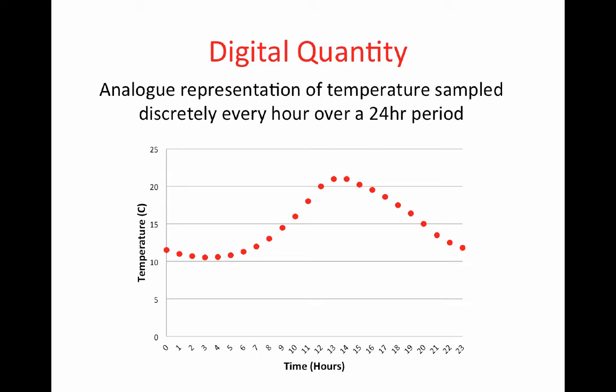This has converted a continuous analogue quantity, in this case temperature, to a discrete set of values that can be digitised, whereby each value sampled can be represented by a digital code. For example, 20 degrees Celsius is equal to 10100 in digital binary.